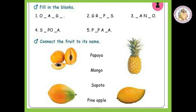Filling the blanks. Children, first you try them. Afterwards, I will tell the correct answer. Come on children. Okay children, now I will tell the answer. First one — Orange: O-R-A-N-G-E. Orange. Second one — Grapes: G-R-A-P-E-S. Grapes. Third one — Mango: M-A-N-G-O. Mango. Fourth one — Sapota: S-A-P-O-T-A. Sapota. Fifth one — Papaya: P-A-P-A-Y-A. Papaya.